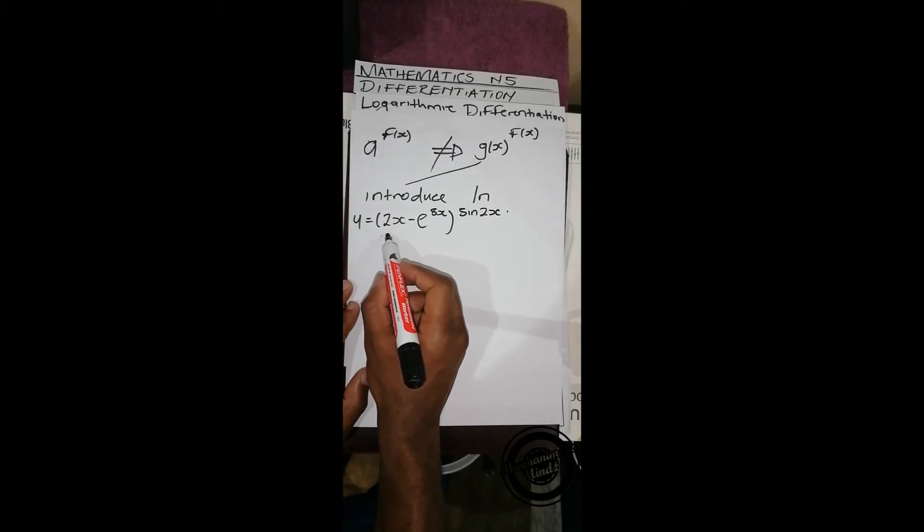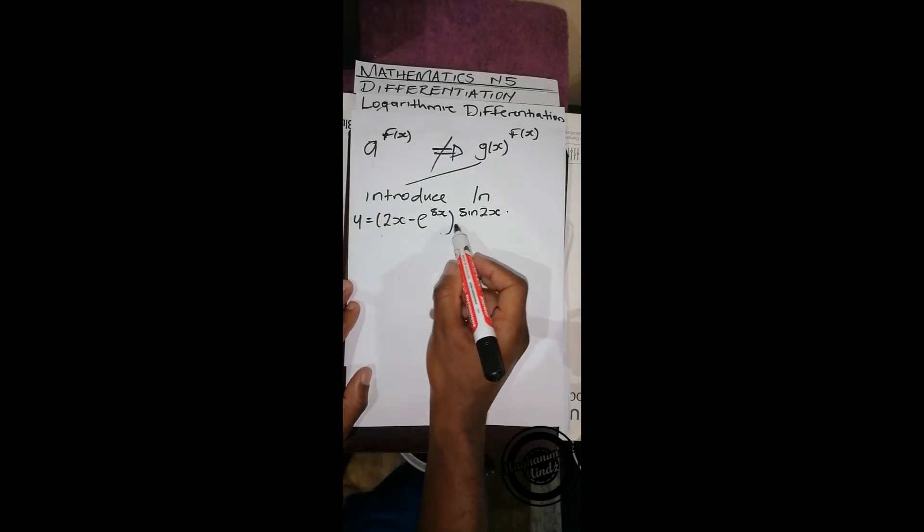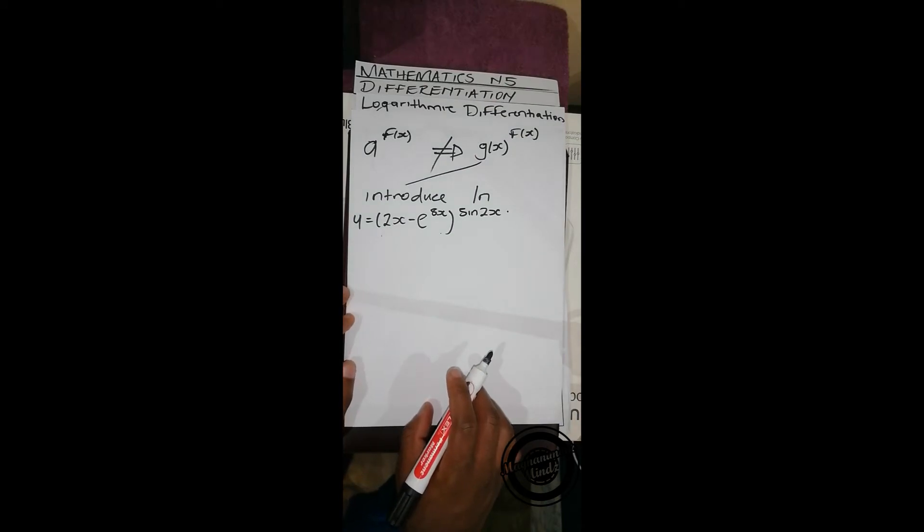Realize that this is a function on its own, and this is also a function. So to do this, we introduce ln on both sides.